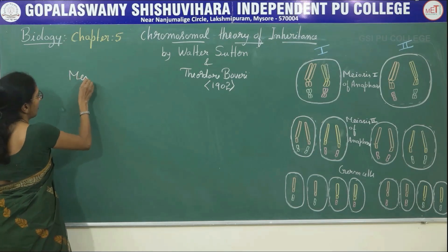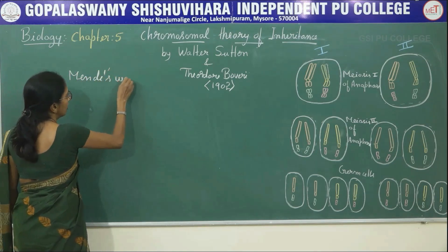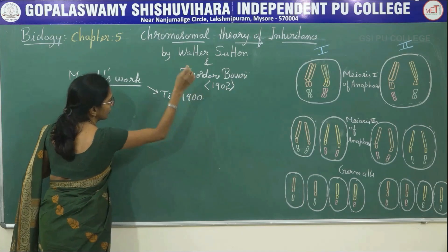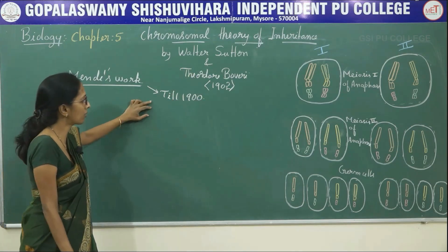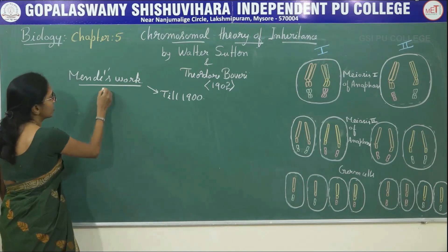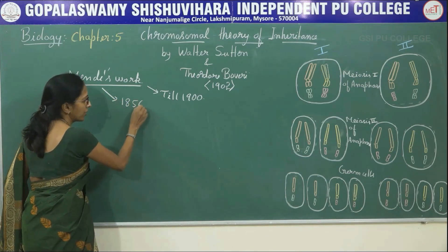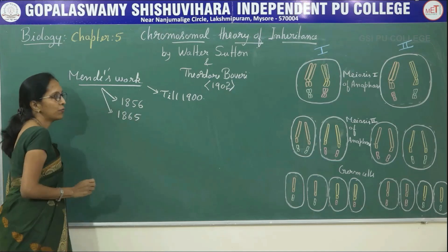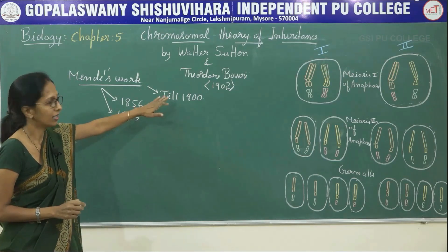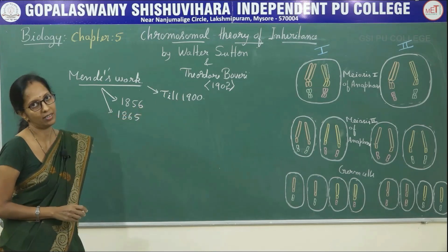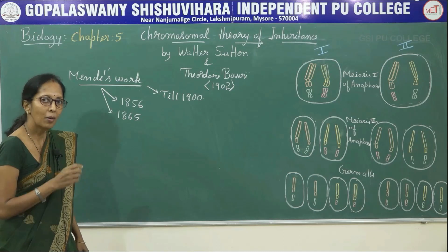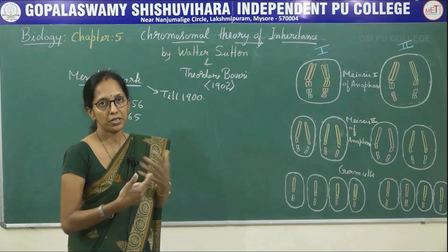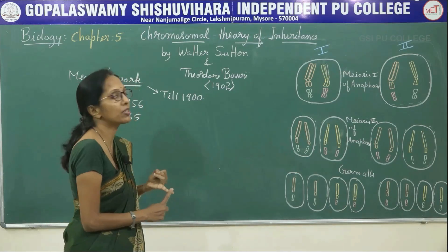Mendel's work was not recognized till 1900. Mendel started his work in 1856 and published it in 1865. Unfortunately, Mendel's work remained unrecognized till 1900 because of some reasons. During that time, communication was not so easy — that is the first point.